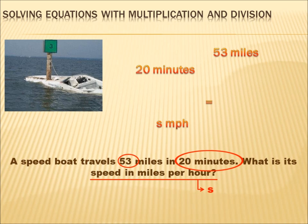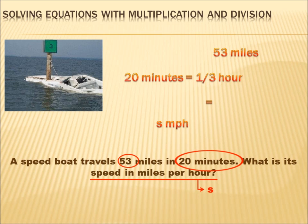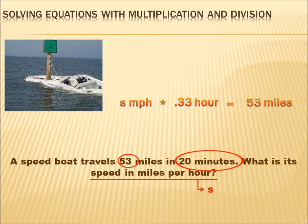All we have to do is shuffle those things around so that we create an algebraic expression that makes some sense, and then we can try to solve it. But wait — our speed is in miles per hour, and the amount of time we're traveling is in minutes. We can't relate minutes to hours. We have to convert 20 minutes into a measurement of hours. 20 minutes is one third of an hour — 20 over 60 reduces to one third. So our speed in miles per hour times one third hour, or 0.33 hours, equals 53 miles. That's an algebraic expression we can solve.